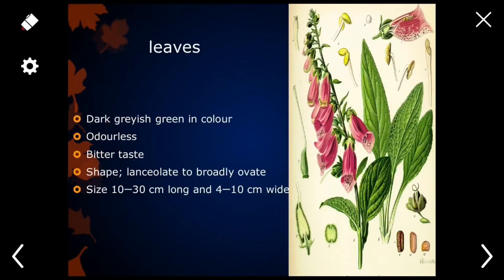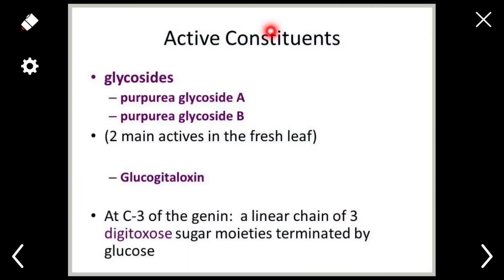Common names include foxglove, purple foxglove, finger flower, and fairy glove. The vernacular name is fairy fingers. The leaves are dark grayish-green, odorless, with a bitter taste. Their shape is lanceolate to broadly ovate, measuring 10 to 30 cm long and 4 to 10 cm wide.